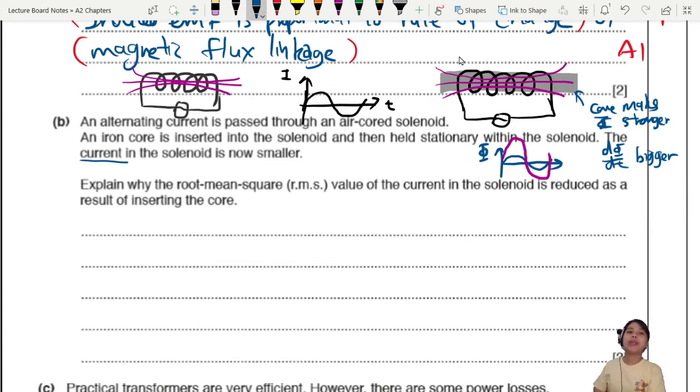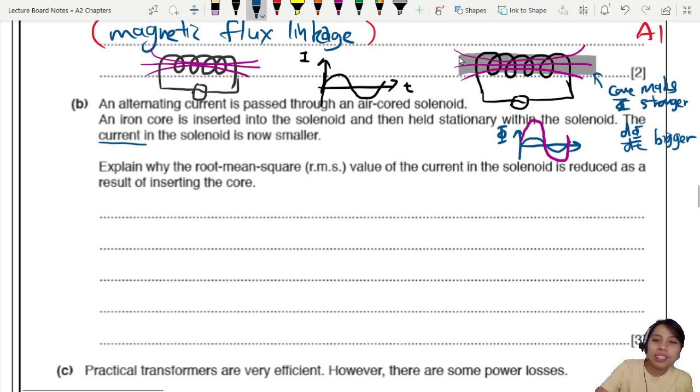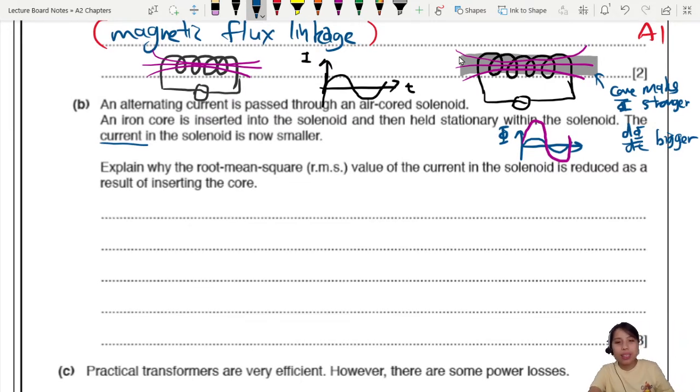So how does that affect the RMS in the solenoid? Why it becomes smaller? Opposed to change. So this smells like an induction question. So how do we talk about this thing? We will get to the RMS eventually. But the main player is we're looking at the current in the solenoid. Current in the solenoid. So, what happens when you insert a core?